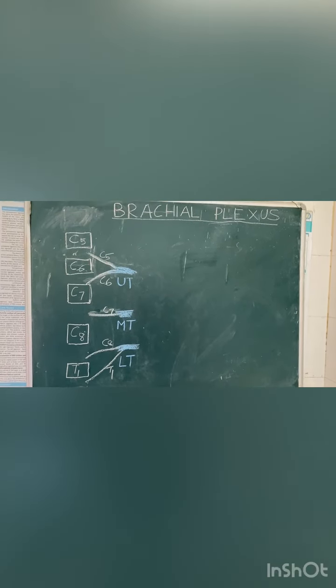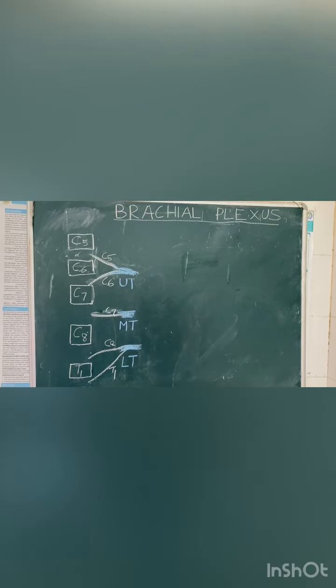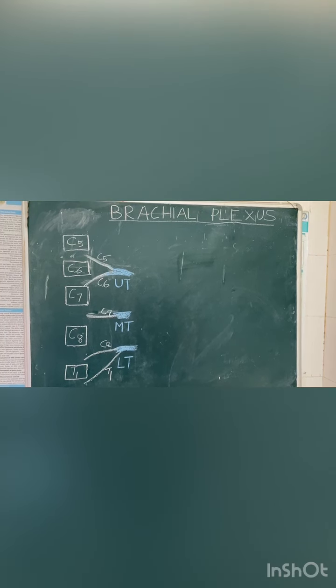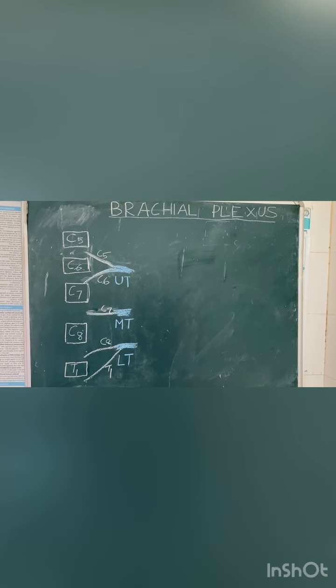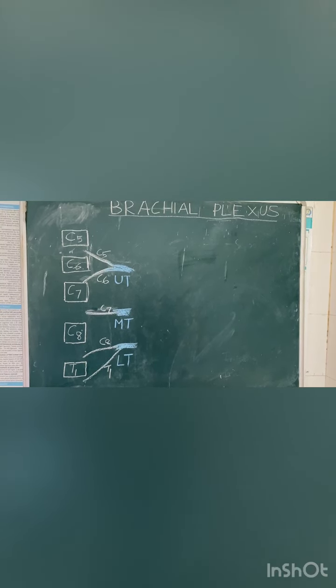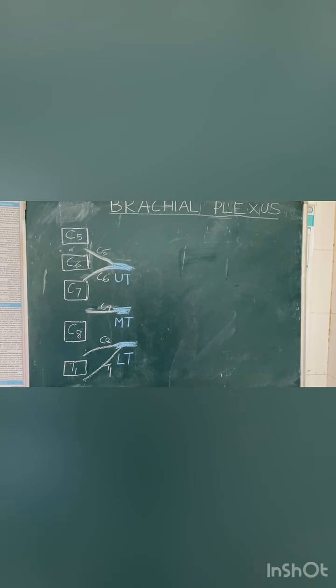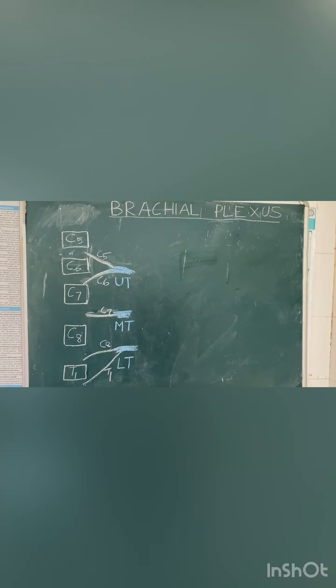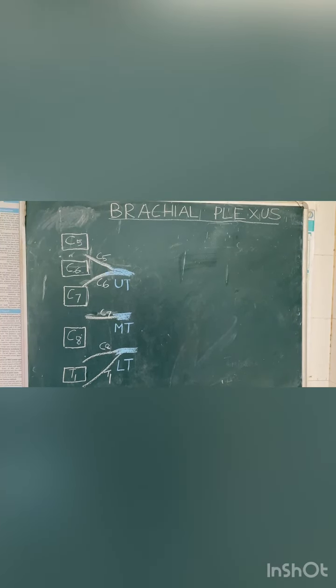We have drawn the nerves — the ventral rami of C5, C6, C7, C8, and T1. These ventral rami of C5, C6, C7, C8, and T1 are called the roots of the brachial plexus.